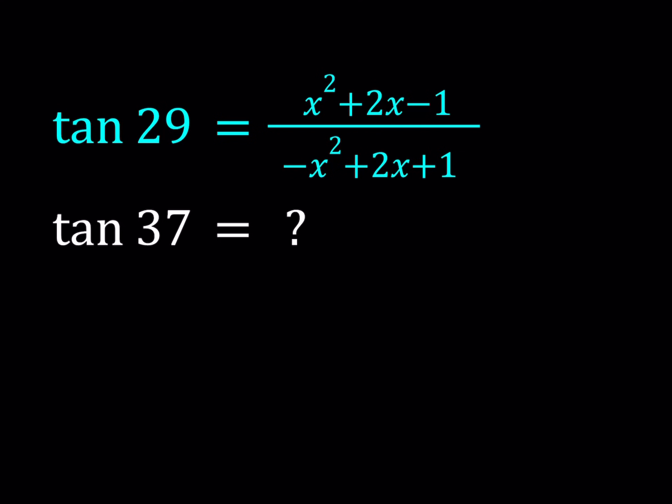In this video, we're going to be evaluating a trigonometric expression. We're given tangent 29 degrees and we are supposed to find tangent 37 degrees in terms of x. Both of these angles are in degrees, not in radians. Now we've done similar problems before, but this problem is a little different because we're going to work backwards, kind of.